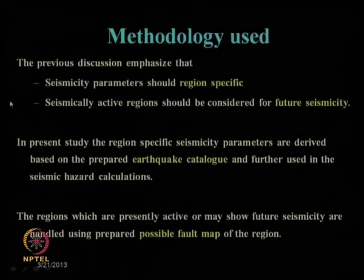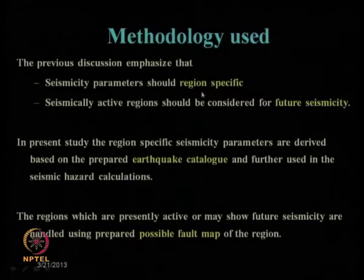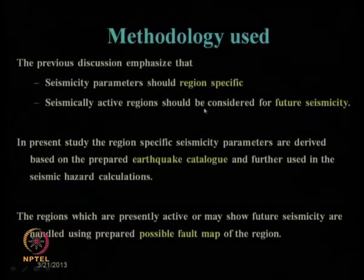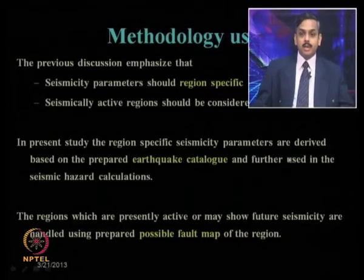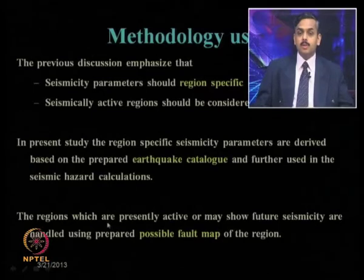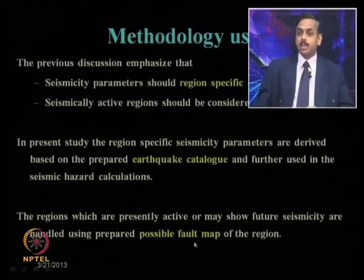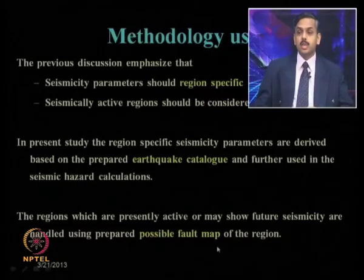The methodology emphasizes that seismicity parameters should be region-specific, since using a single parameter for all of Gujarat is not justified. It is also not justified to assume seismicity is fixed in one location, since it migrates. In the present study, region-specific seismicity parameters are derived from the prepared earthquake catalogue, and seismically active regions — including those that may show future seismicity — are handled using a prepared possible fault map.